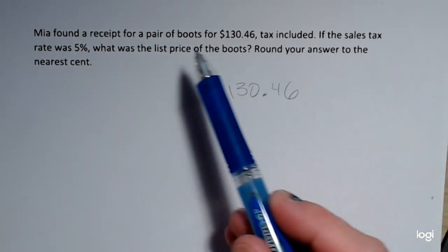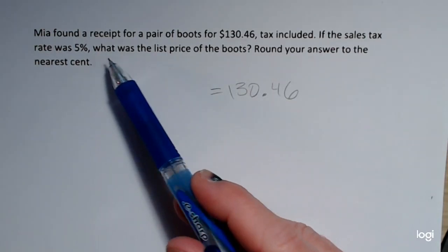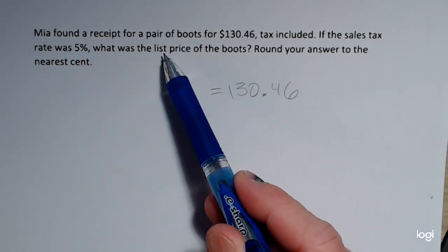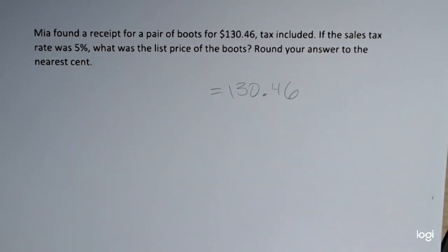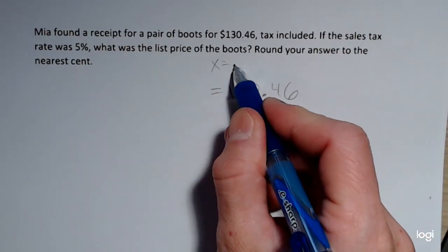Now it says if the sales tax rate was 5%, what was the list price? The list price being the original price or the tag on the boots. So I'm going to let x equal the list price.